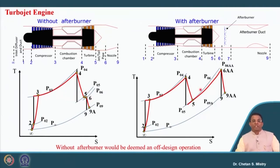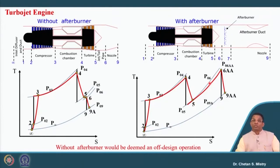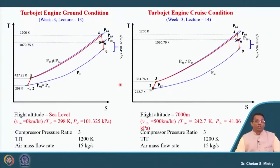Similarly, we discussed the afterburner configuration where the expectation is to generate higher thrust for a short duration. From process 5 to 6AA, we are adding a lot of heat by injecting a lot of fuel, raising the temperature to 6AA. If running this engine for a long duration, we may drain out the fuel — fuel consumption for this configuration is very high. Let us look at what we have discussed for ground condition and cruise condition.